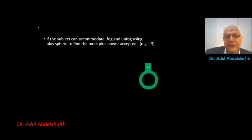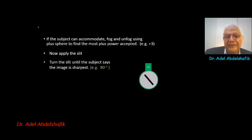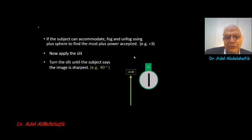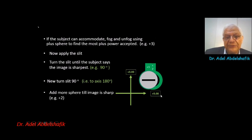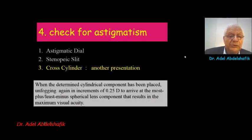With fogging, we apply the slit, rotate it, and ask the patient where the sharpest image is. For example, if they say 90 degrees, we add lenses until we get the best vision on that meridian. Then we rotate the slit to 90 degrees and add more lenses until a clear image is obtained. If we added two diopters on that meridian, we know the patient has a cylinder of plus two. Alternatively, we can use the cross cylinder, which is covered in another presentation.